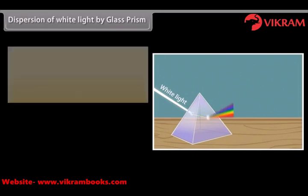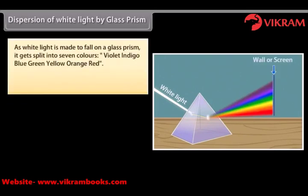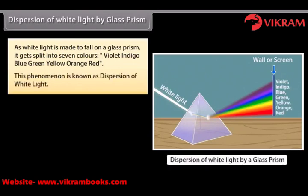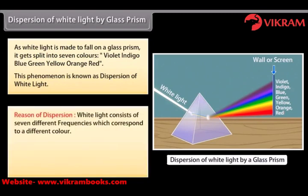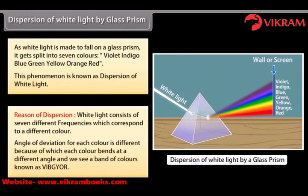When white light is made to fall on a glass prism, it gets split into seven colors: violet, indigo, blue, green, yellow, orange, red. This phenomenon is known as dispersion of white light. White light consists of seven different frequencies which correspond to different colors. The angle of deviation for each color is different, because of which each color bends at a different angle and we see a band of colors known as VIBGYOR.